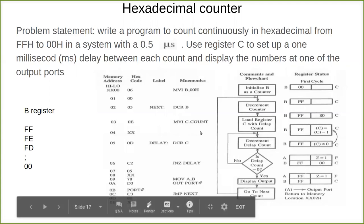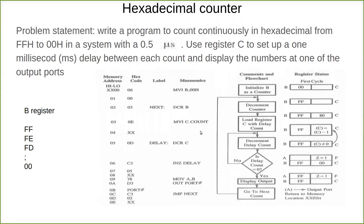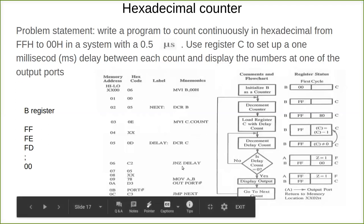We need to find out how much value to move into the C register in order for that one millisecond delay to occur — that is what we have to find out in this problem. In the B register, we use hexadecimal counting from 00 to FF and FF to 00, and within that we introduce a one millisecond time delay between one output and another, using register C.